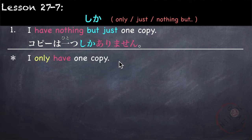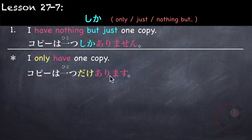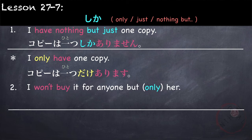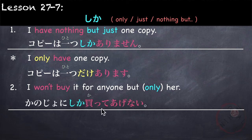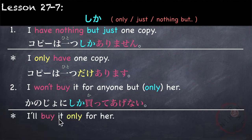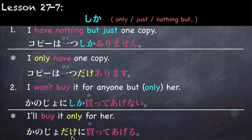If you use だけ: I only have one copy — コピーは 一つだけ あります (positive verb). Another example: I won't buy it for anyone but her — 彼女にしか 買ってあげません (negative). But with だけ: I'll buy it only for her — 彼女だけに 買ってあげる (positive form). So しか uses the negative verb, and だけ uses the positive verb.